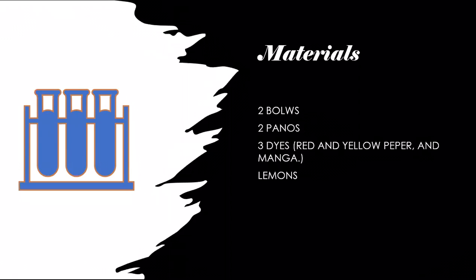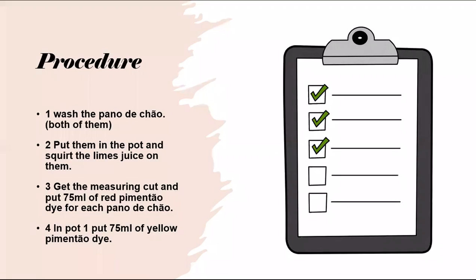Number one: Wash the fabric as shown and put them in two pots and squirt lime juice on them using the lemons from before. Get a measuring cup and put 75ml of red pimento dye on each fabric piece.